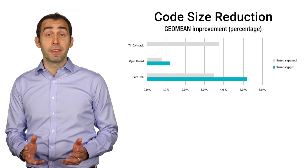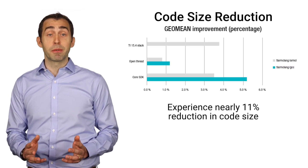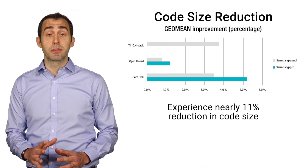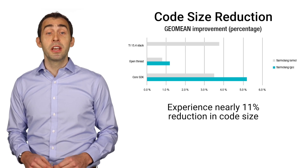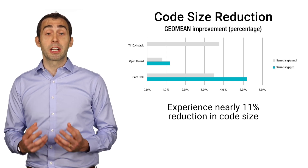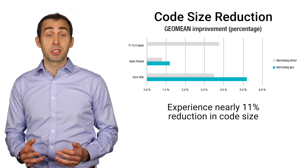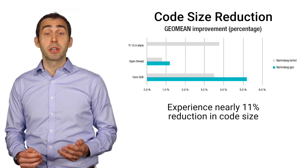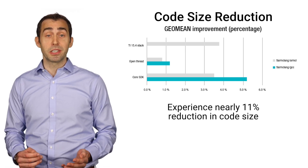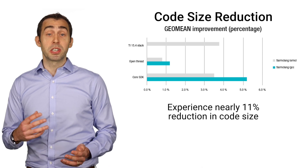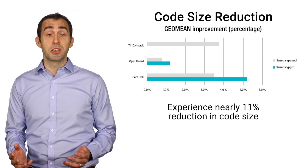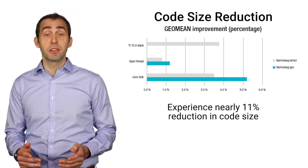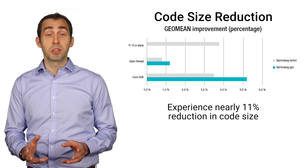One of the benefits of the TIRM Clang compiler is code size reductions. The ability to deliver compact code is critical for memory constrained applications. Reduction in code size allows you to get additional functionality from your solution.